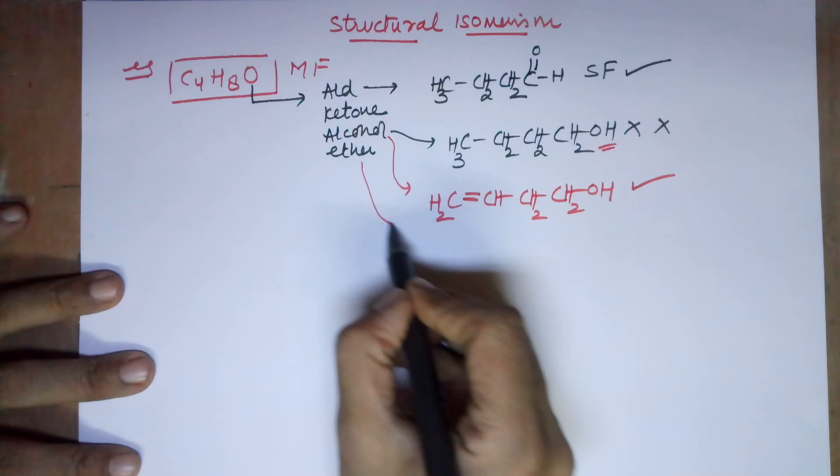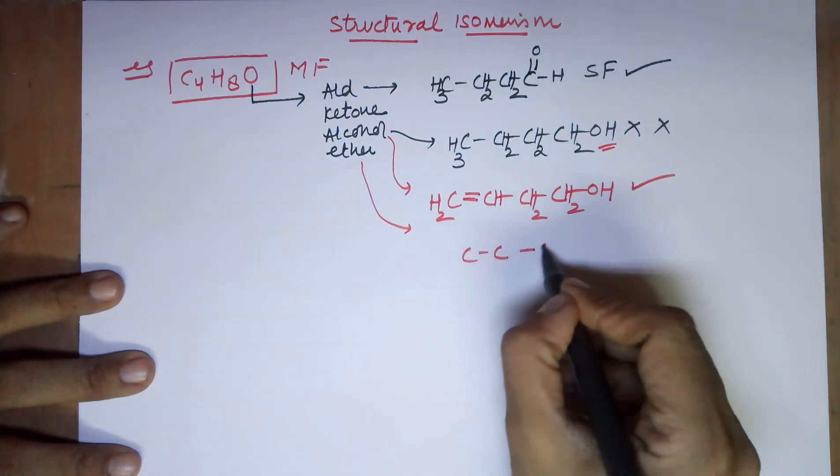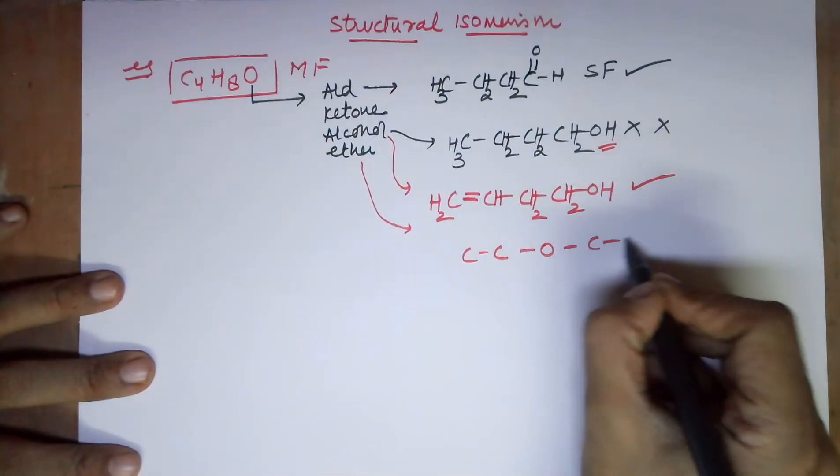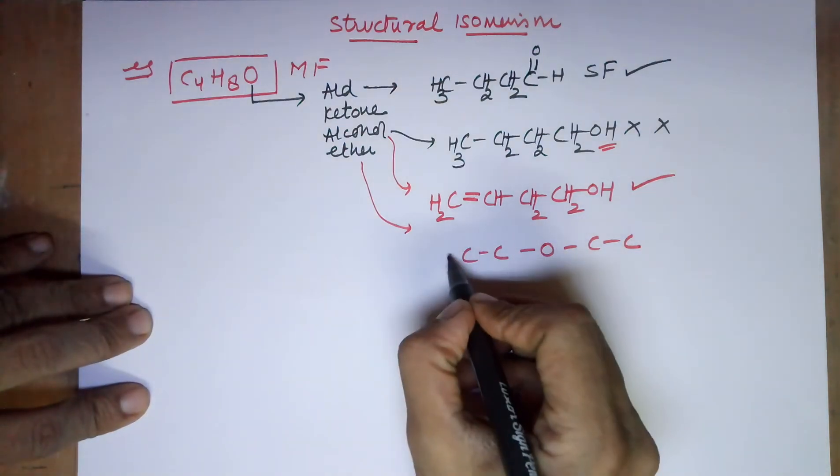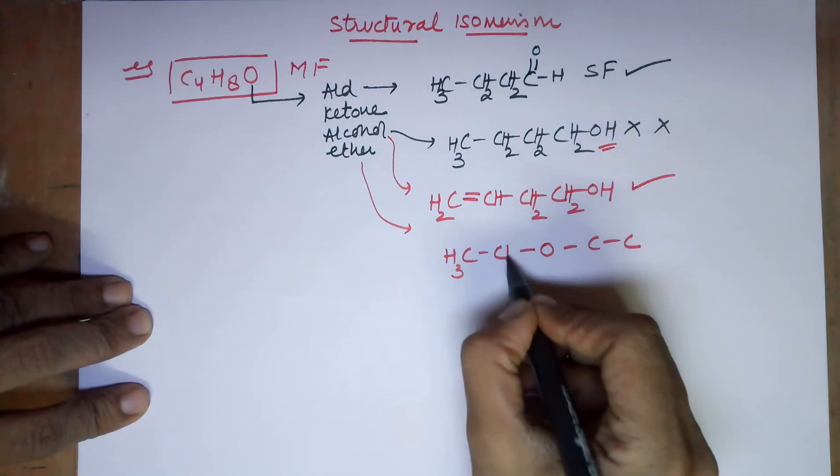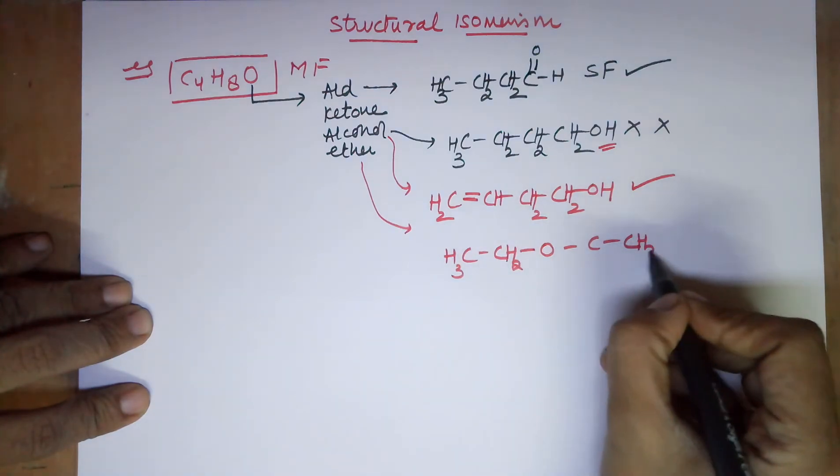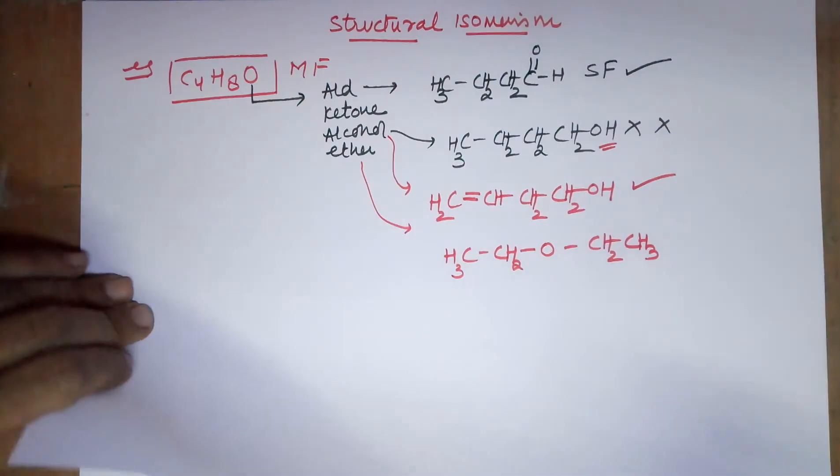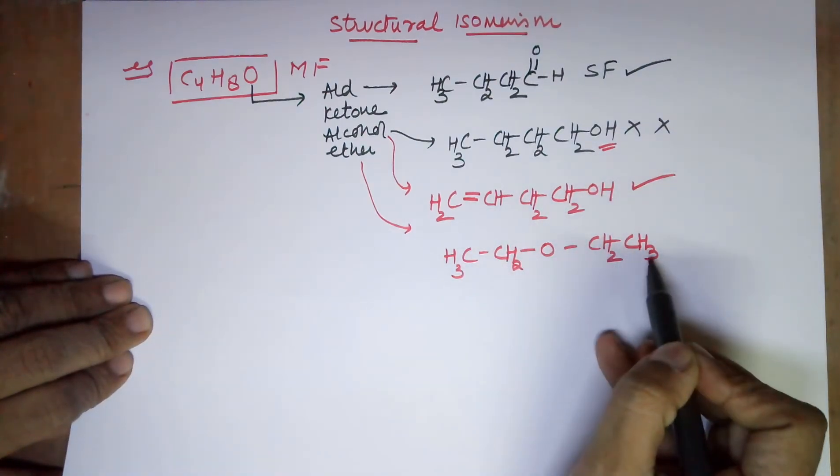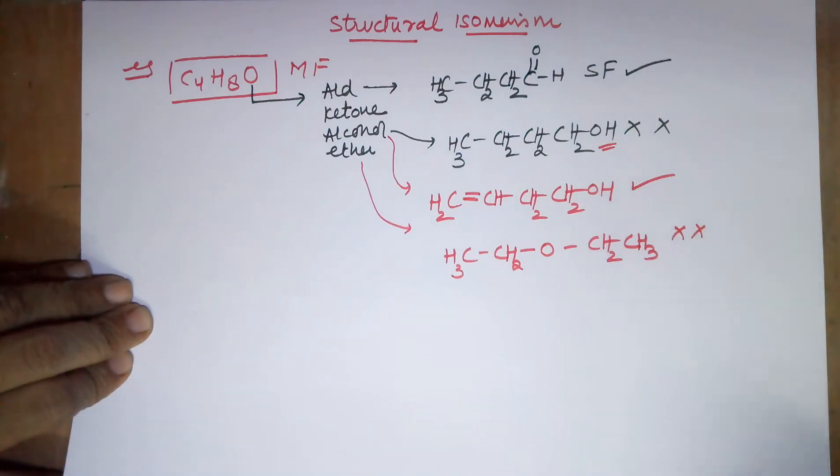If I try an ether, 2 carbons I take on one end and oxygen in between and 2 carbons on the other end. To satisfy the hydrogens of this compound, I need 3 here, 2 here, 3 here and 2 here. Let's count the hydrogens. How many hydrogens does it come up to? 3, 4, 5, 6, 7, 8, 9, 10. Again this is not acceptable.